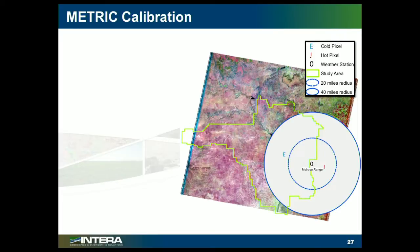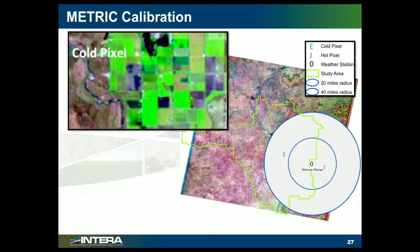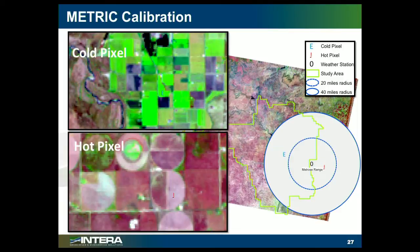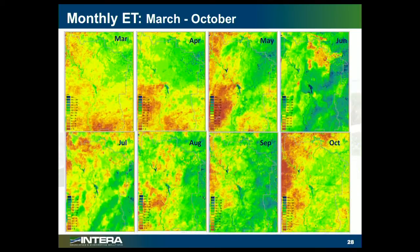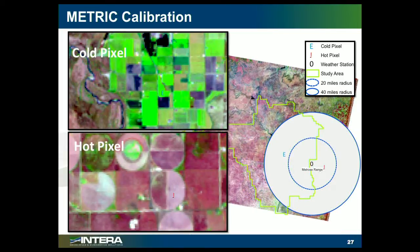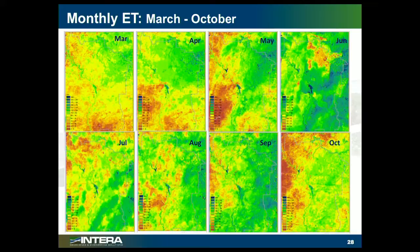The METRIC method is what's called internally calibrated. We have to pick a cold pixel — that's a very well-watered field, typically a well-watered alfalfa field, which will be the coolest spot from a temperature perspective on the Landsat image. Then we pick a hot pixel, which is supposed to be the warmest spot — typically a bare agricultural field that's been plowed but not planted. We assume a linear relationship between those two temperatures, and from that we can produce for each month a map of evapotranspiration, which is really the same thing as consumptive use.